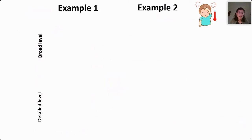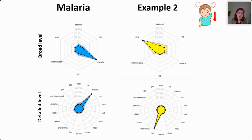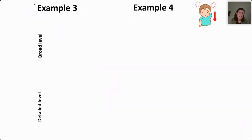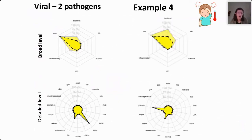Here are a couple of examples of how the results could look as an interface for clinical teams. These are real patient data. One patient had high probability for malaria at the broad level, high probability for malaria at the detailed level — and indeed they had malaria. Another patient had high probability for viral infection broadly, high probability for flu at the detailed level — and they indeed had influenza. We can do the same for co-infections: one patient had high probability for pneumococcus and high probability for flu — and indeed both pathogens were detected.